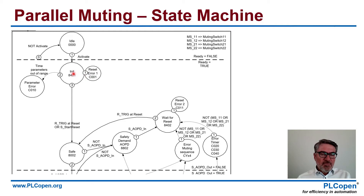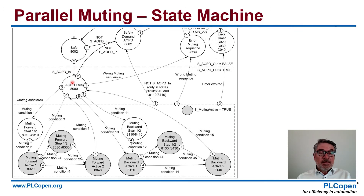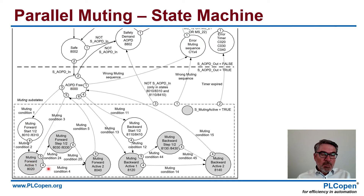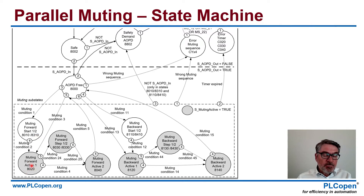If that's okay, and we get an R-tripped reset or we have a start reset, we get to state 8002, which we call safe. For that, we have two ways out. One is the not AOPD — there is no safety demand — so we wait for that. And then we go down. There is a request; we move to the AOPD free, state 8000, the safe mode. Then we check the whole muting sequence. You see muting condition one, muting condition two, muting condition three — which goes directly — and muting condition four. Muting condition one moves to two bubbles — 8010 and 8310 — and you can come out of those to 8020. You go from 8010 to 8020, or from 8310 to 8020, under muting condition two.